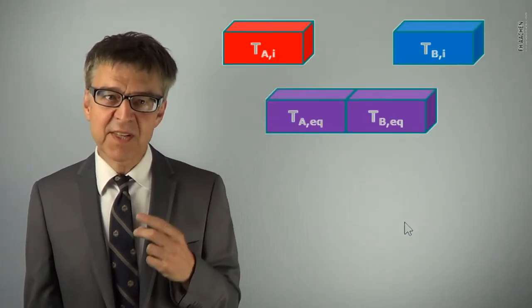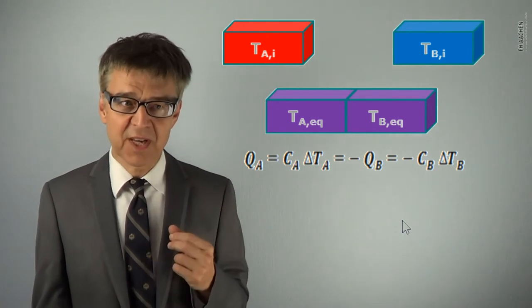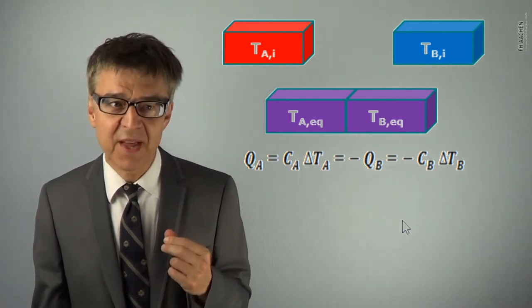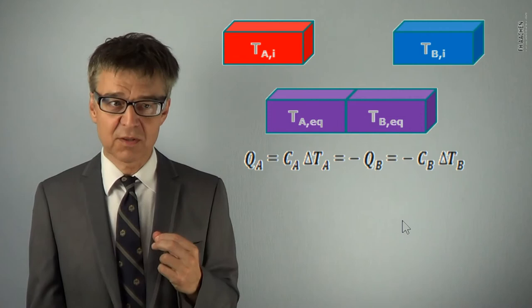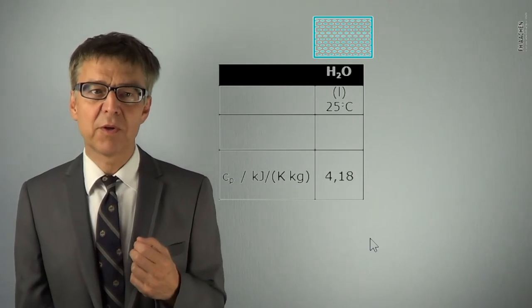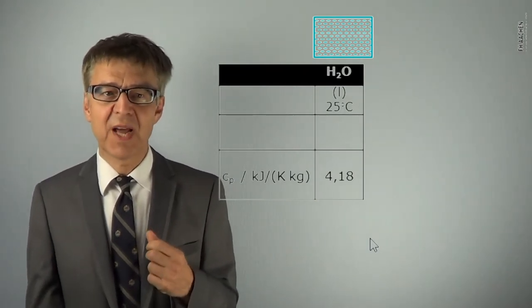The basic equation in this form is a simplification, since it is assumed that heat capacity is constant. Here are a few numbers. We are already familiar with the specific heat capacity of liquid water, 4.18 J per Kelvin in grams.